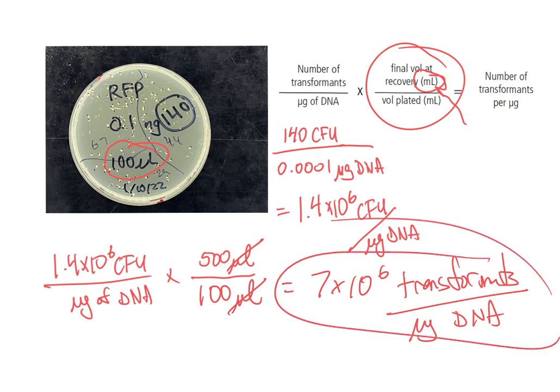That number may mean nothing to you, but generally for cloning aspects a transformation efficiency of one times ten to the six is minimal. We would like greater than one times ten to the six, so whoever made these cells, they were made a few years ago, they made good cells. These are more than sufficient for the type of cloning that we're going to do.